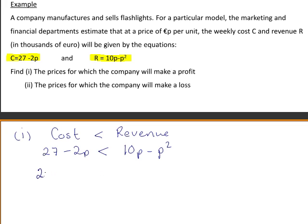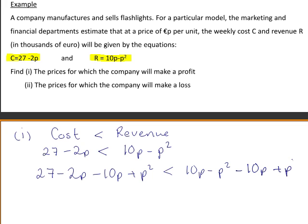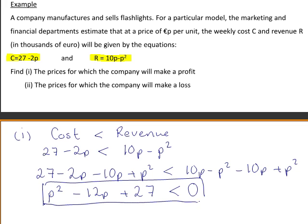To do that, we will subtract 10p and add p squared to both sides of the inequality. You should now see that this is a quadratic inequality since we have one or more of the above inequality symbols and the highest power of the variable involved is 2.